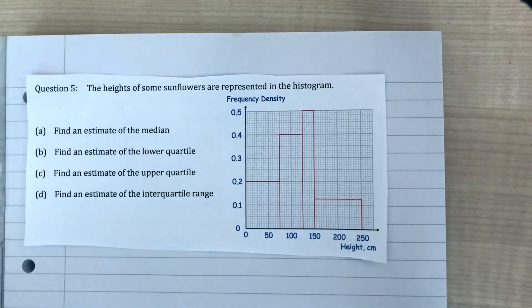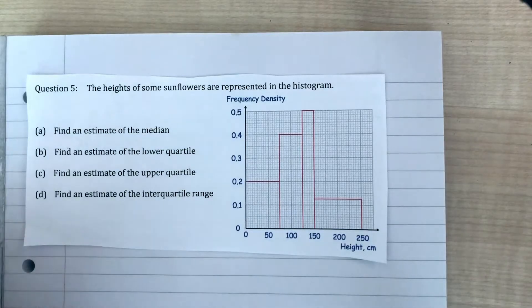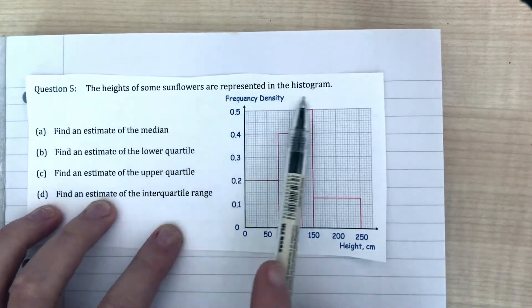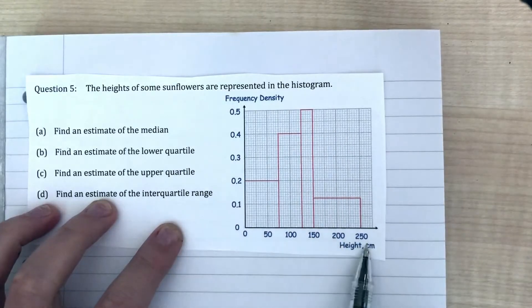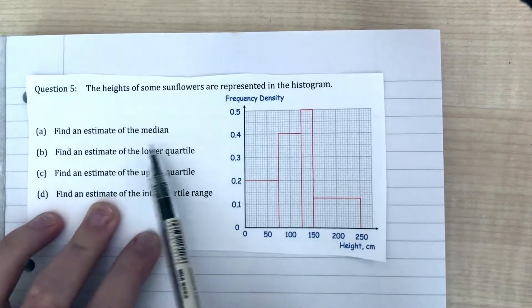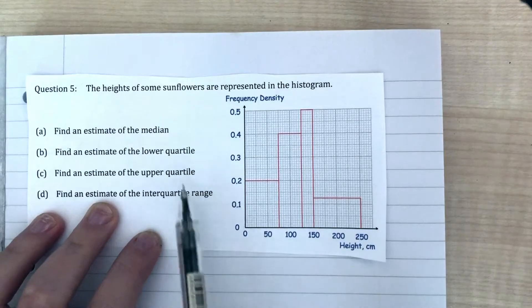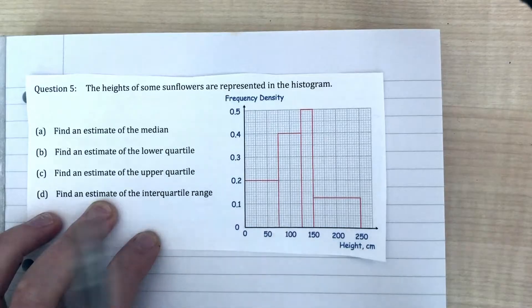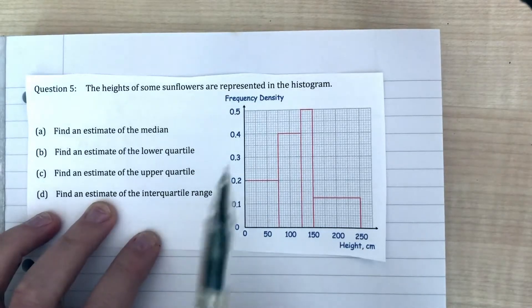Here we've got a histogram already drawn for us. We're being asked to find some simple information in theory, but it's a little bit more tricky on a histogram. We've got heights of sunflowers represented on this histogram. We want to find the median, lower quartile, upper quartile, and the interquartile range. There's no table to accompany this, so we have to do everything ourselves, which makes it a little bit tricky.